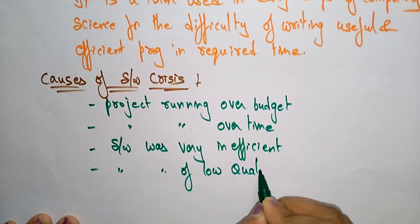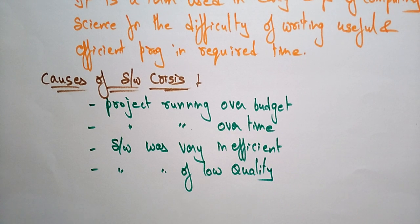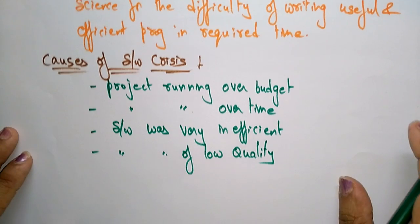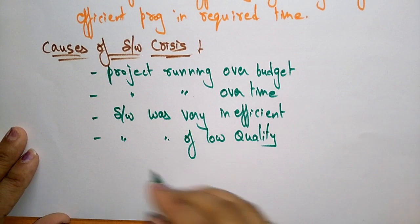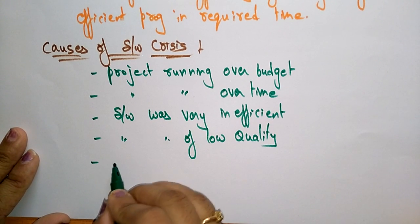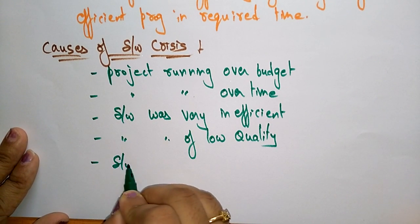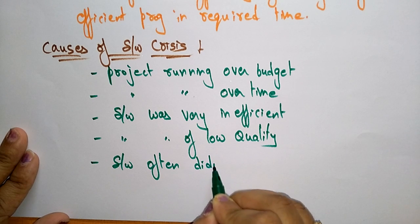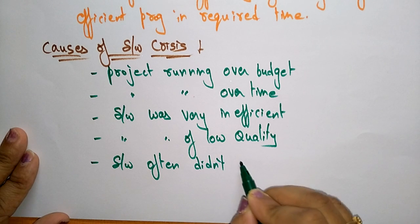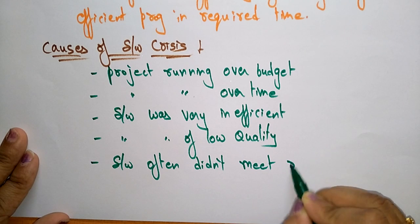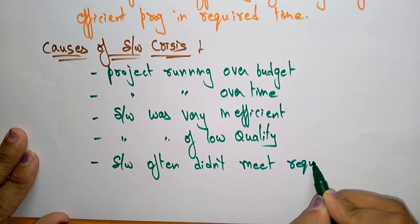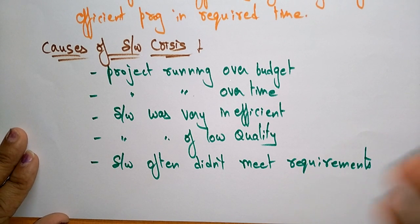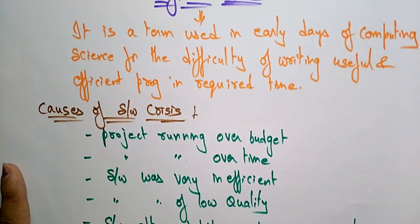If low quality software is used due to budget problems, that leads to software crisis. And if the software did not meet requirements, that also leads to software crisis. These are the different causes that lead to software crisis.